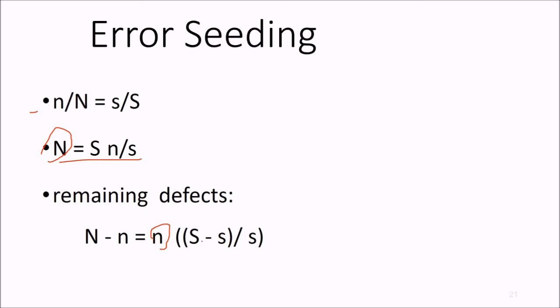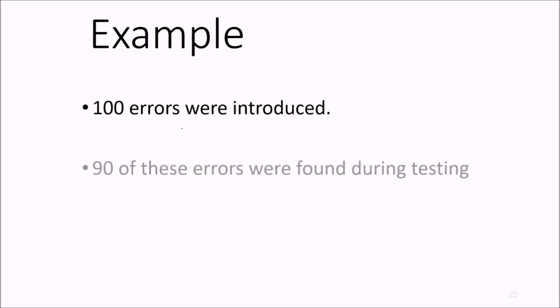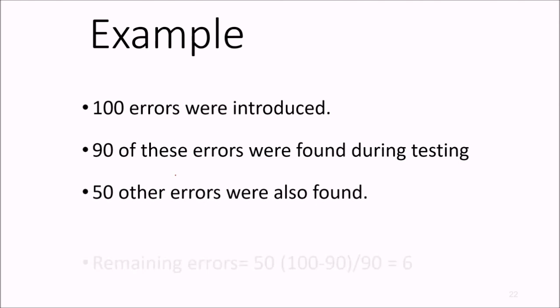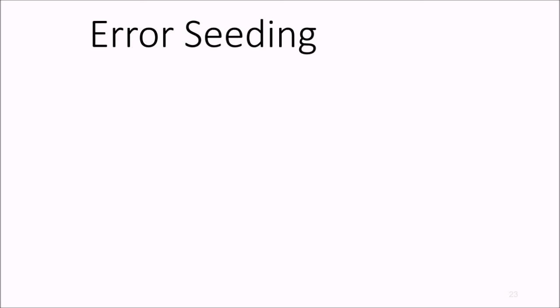For instance, 100 errors were introduced, 90 of these errors were found during testing, and 50 other errors were also found. So remaining error would be 50 times (100 minus 90) by 90, that will be the remaining errors are 6.